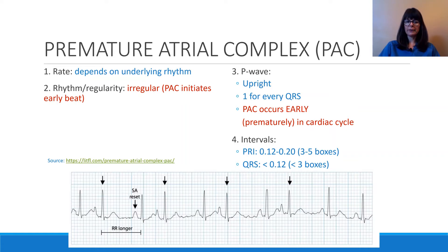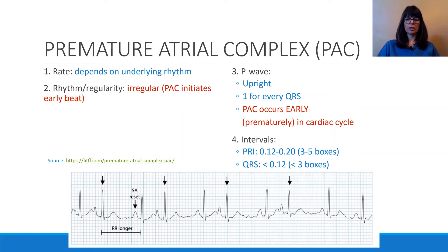Looking at this example rhythm strip, we can look at the rate first. Counting 1, 2, 3, 4, 5, 6, 7, 8, 9, 10 QRSs gives us a heart rate of 100. We can already see that the rhythm is pretty irregular. Even without calipers or EKG paper, we can see that the distance between some beats is longer than between others.